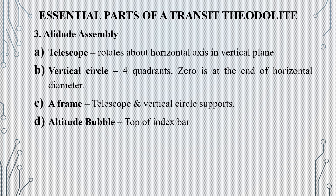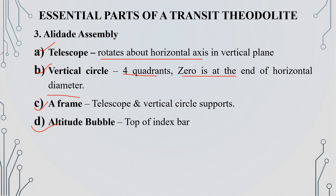The third classification of essential parts of the transit is the alidade assembly. In the alidade assembly, there is a telescope with a vertical circle and a supporting frame. The telescope has a vertical plane and the horizontal axis can rotate. The vertical circle is divided into 4 quarters. The frame holds the horizontal axis and supports the vertical circle.